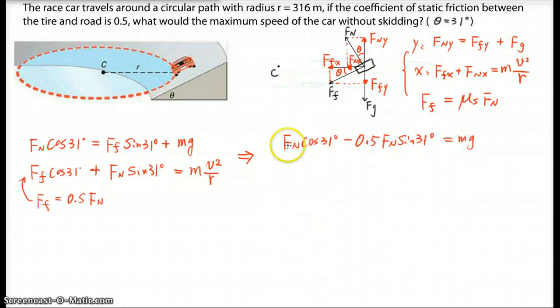So we can see we isolate all the Fn on one side. And then the second equation is Ff, again, equals 0.5 Fn cos 31 degrees plus Fn sine 31 degrees should equal M V squared over R. Now both equations, you can factor the Fn out, and then we just basically divide the two equations. Let's label this 1 and 2.